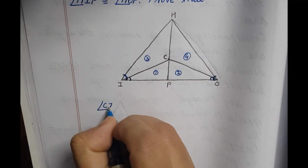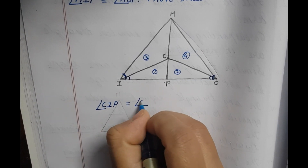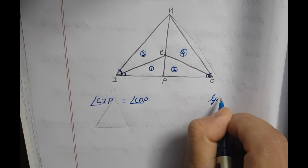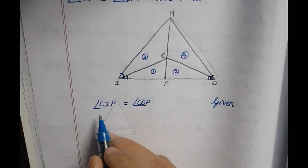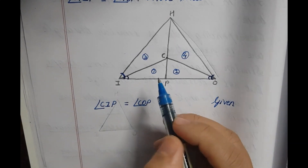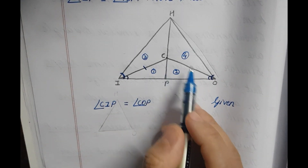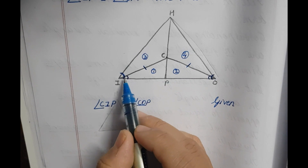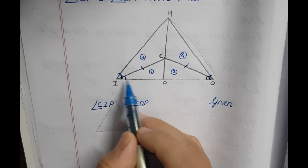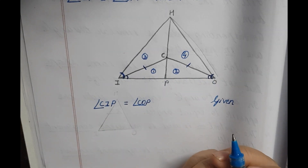Angle CIP is equal to angle COP, which is given. When CIP is equal to COP, the side CI will be equal to CO. On the rule: if the angles are equal, then the sides opposite to them will be equal.